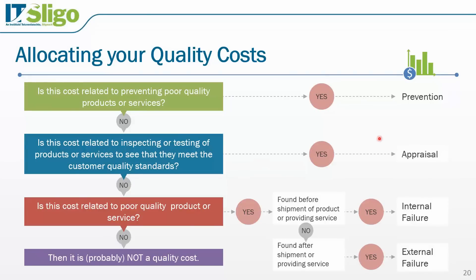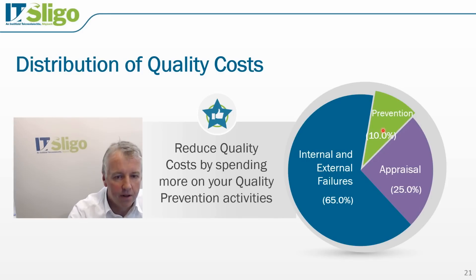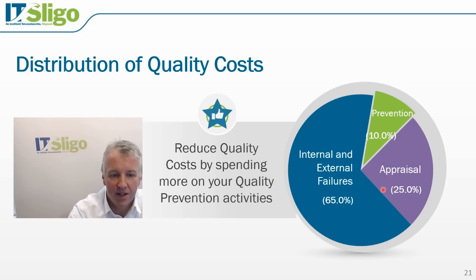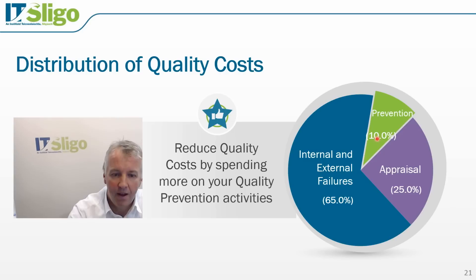Understanding your prevention, appraisal, and failure costs is important. Looking at the distribution of quality costs in this pie chart, typically 10% of an organization's quality costs are prevention, 25% appraisal, and 65% internal and external failures. The idea is that you can reduce your overall quality costs by spending more on prevention. As a result, the percentage spent on prevention and appraisal goes up, but internal and external failure costs come down, reducing the overall total.